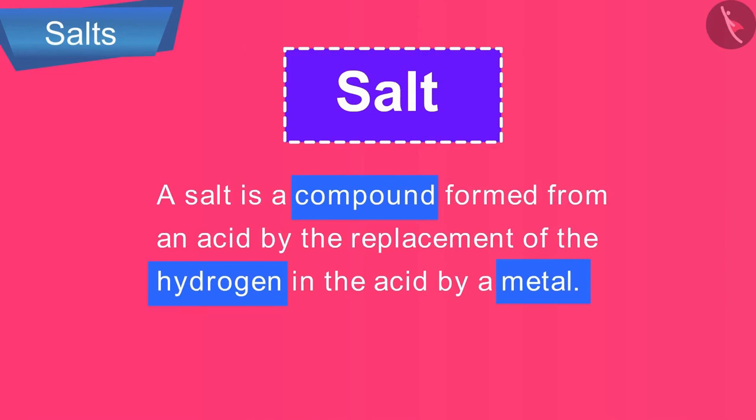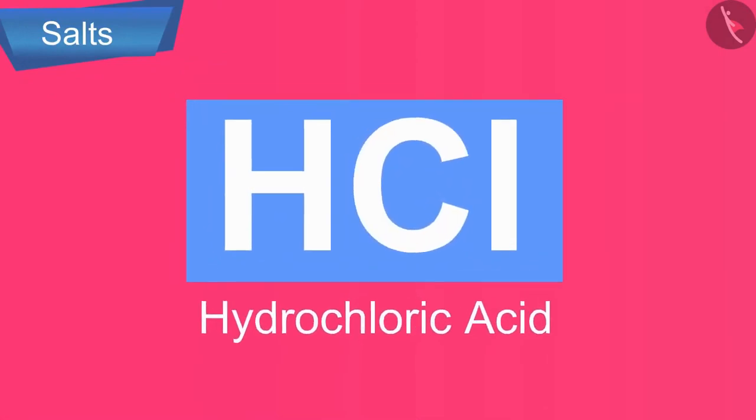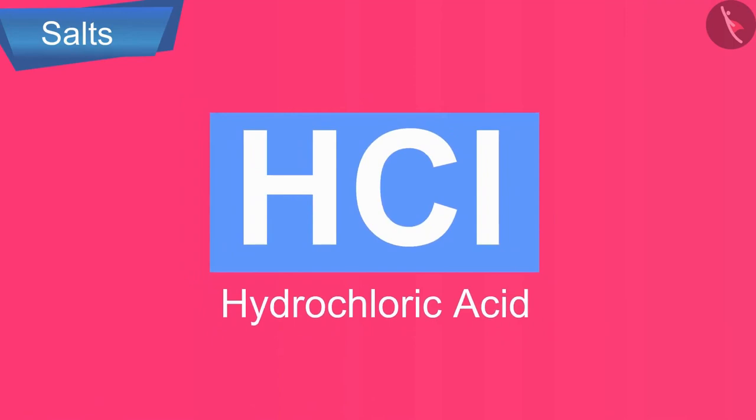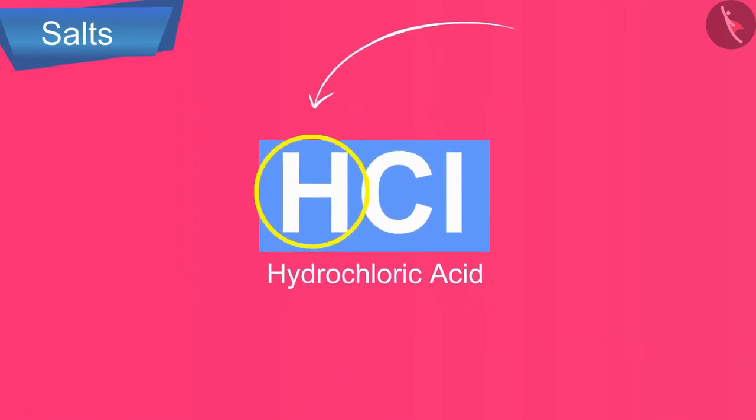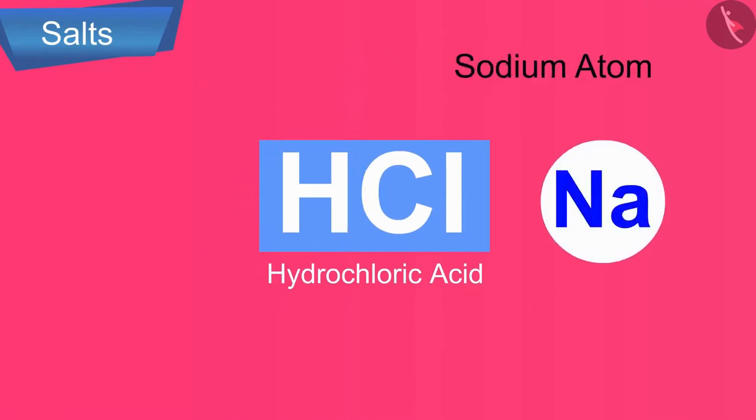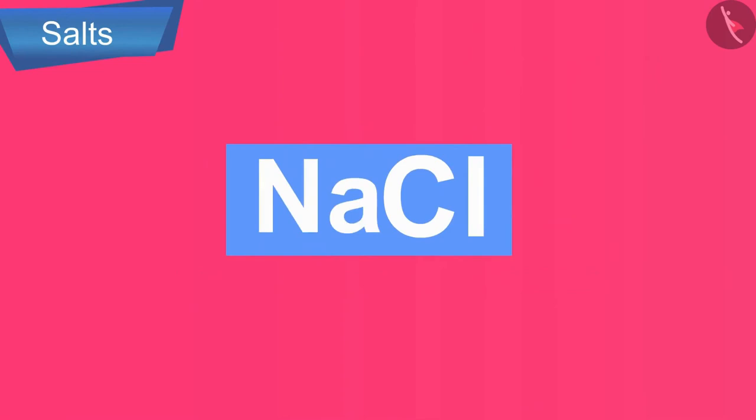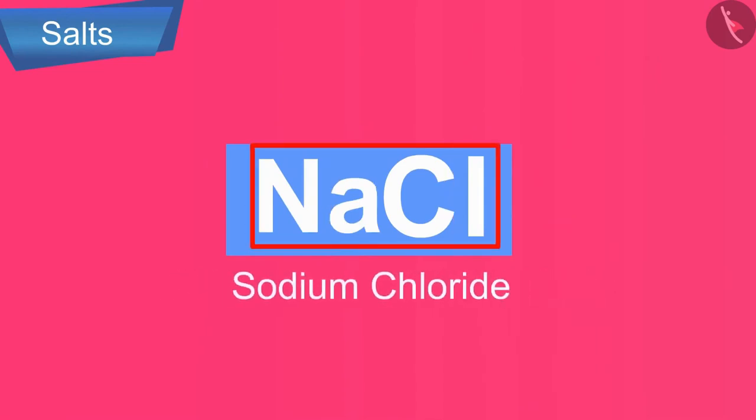We will understand more about salts in detail. Let us understand with the help of an example. Hydrochloric acid is HCl. Now, if we replace the hydrogen of this acid by a metal atom, say sodium atom, then we will get a salt, NaCl.